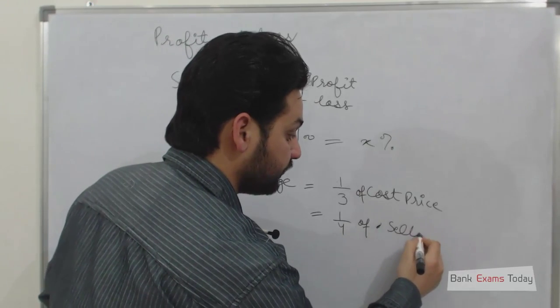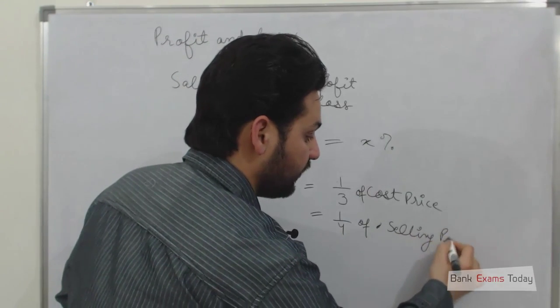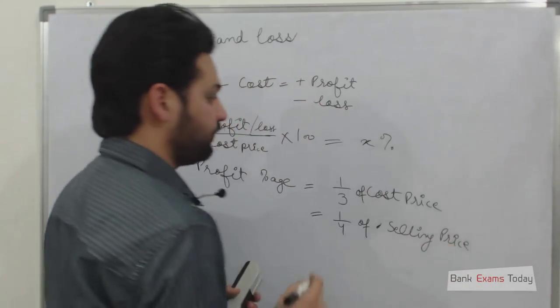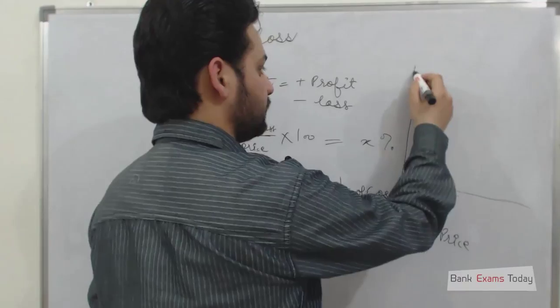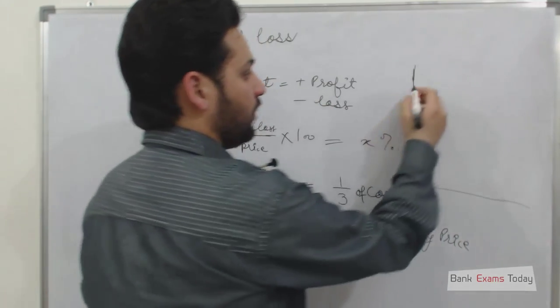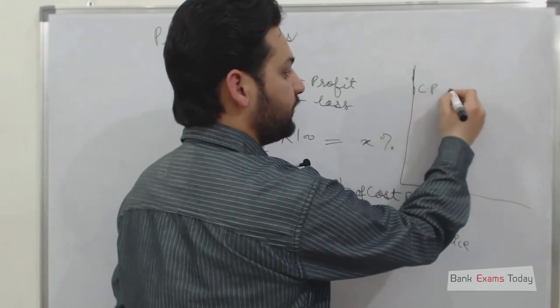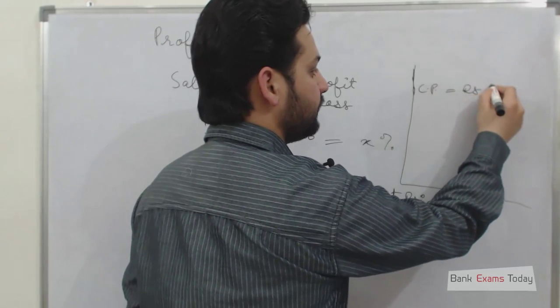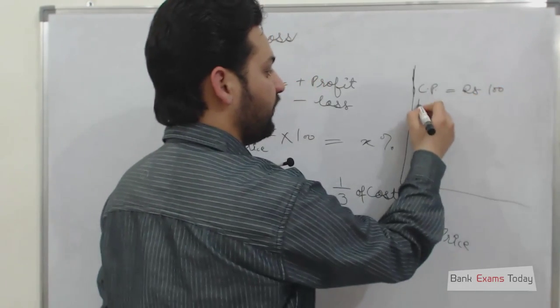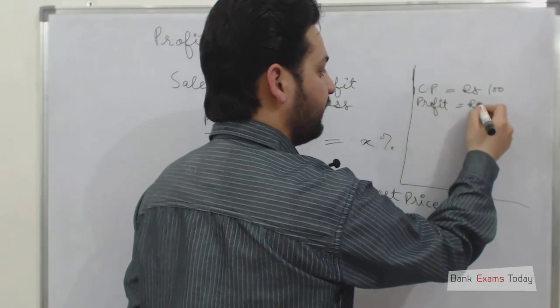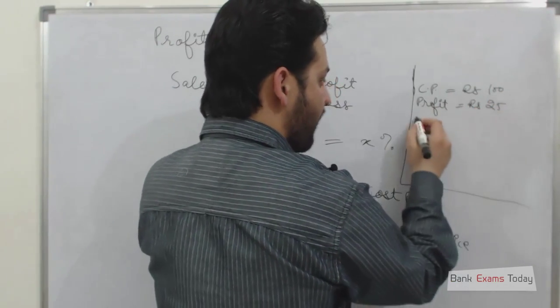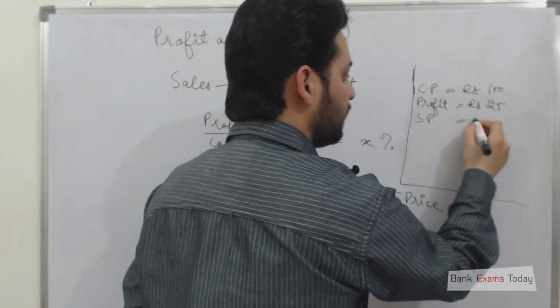I can explain with an example. For example, the cost price is Rs. 100, profit is Rs. 25, so the selling price will be Rs. 125.